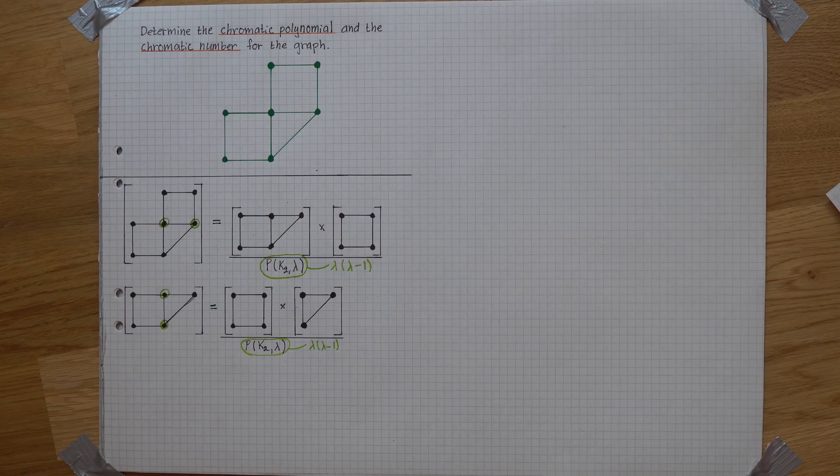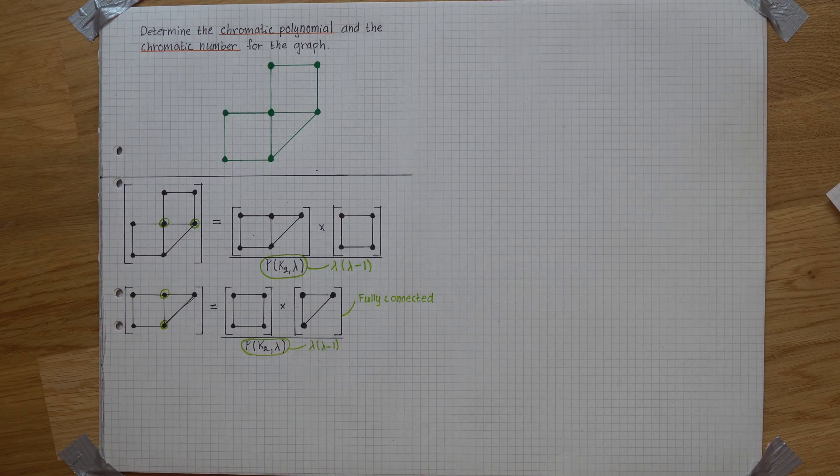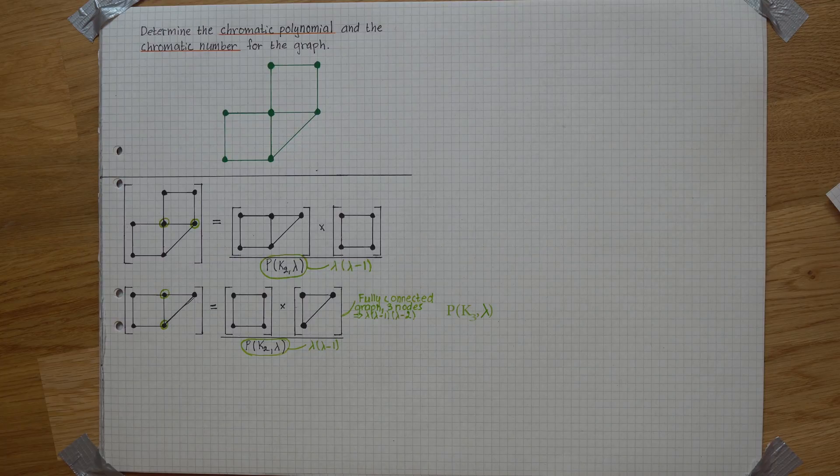Since every node in this graph has an edge to all the other nodes, this is a fully connected graph with three nodes, giving us P(K3, λ) that is equal to this.